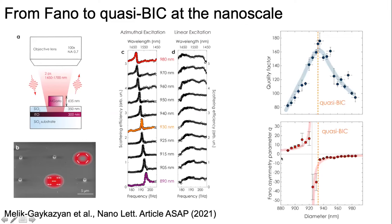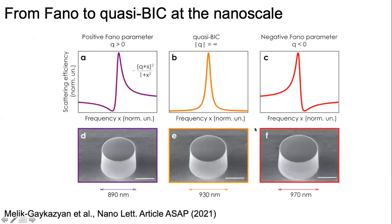When we extracted the parameters of these lines, we could indeed detect the change of sign in the vicinity of the quasi-BIC mode. To summarize: if you change the size of the particle by just 10%, you can realize three regimes — positive Fano parameter, negative Fano parameter, and then a Lorentzian lineshape at the quasi-BIC condition.